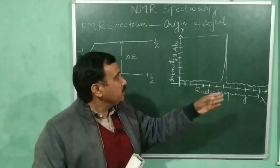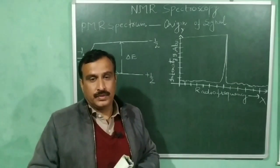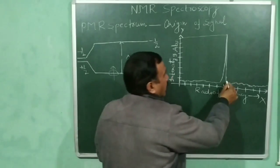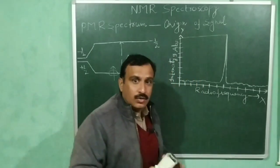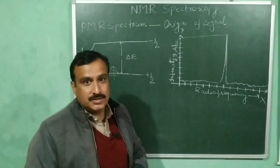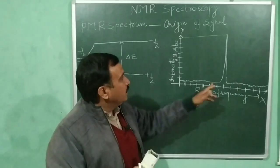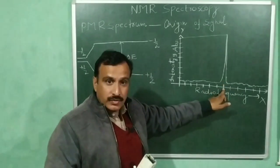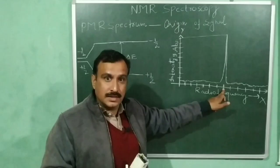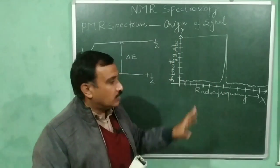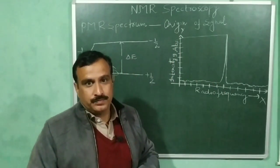This peak of high intensity of absorption is called a PMR signal. The rest of the frequencies, both lower and higher than resonance, are not absorbed as their energy doesn't correspond to this energy gap. This peak corresponding to the resonance frequency is called the NMR signal, and this plot or graph is called the PMR spectrum.